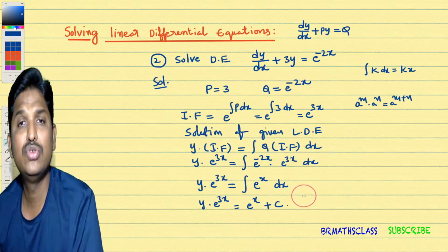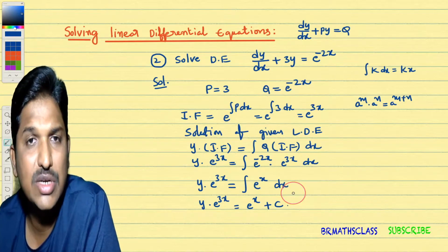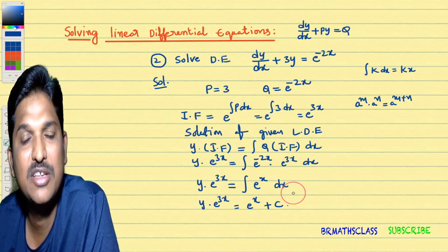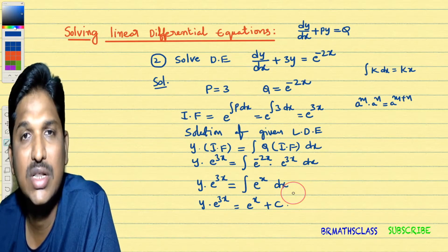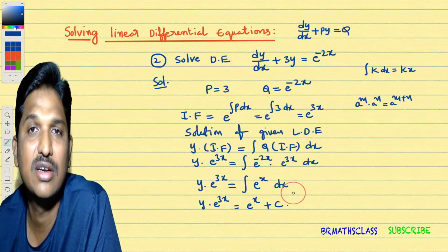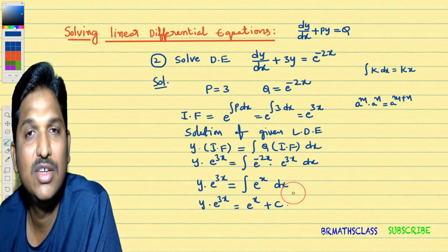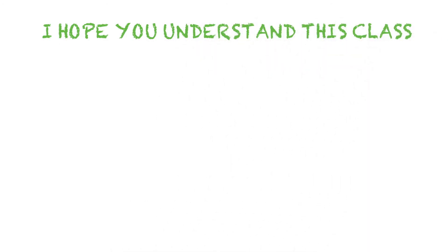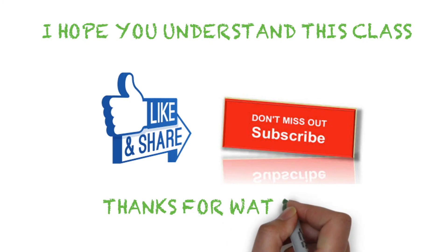You have learned how to solve linear differential equations. A differential equation of the form dy by dx plus py equal to q is called a linear differential equation. The procedure has three steps: Step 1 — identifying p and q; Step 2 — calculating the integrating factor; Step 3 — writing the solution of the linear differential equation. I hope you felt solving linear differential equations is easy. If you like this video, please share it with your friends. If you are not yet subscribed to my YouTube channel, subscribe now. Thanks for watching. Have a great day. Bye bye.